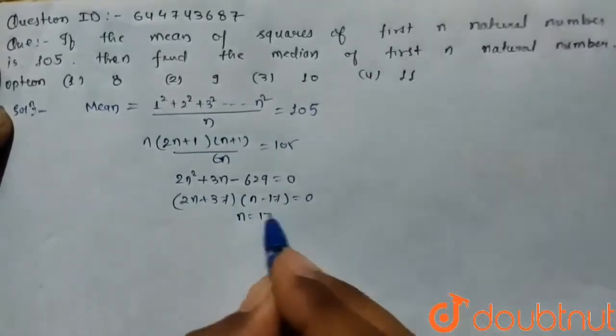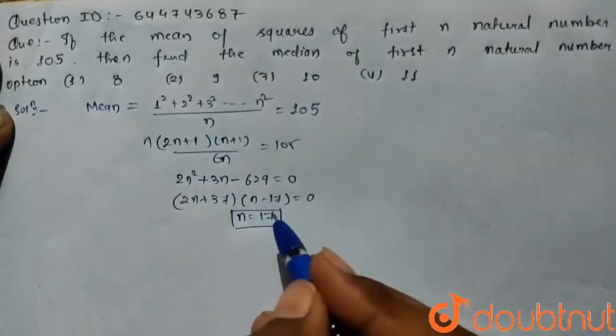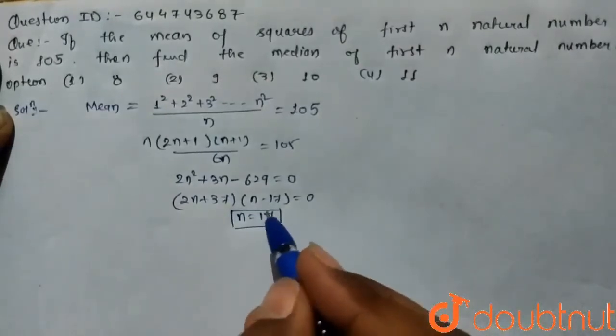So n equals 17. It means the number of terms, the number of natural numbers, is 17.